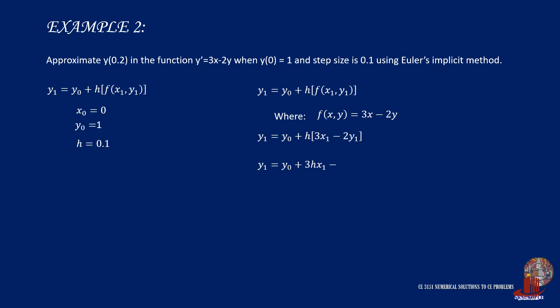Similarly, collect all y1. So move -2h·y1 to the other side and factor out y1. Then, the particular solution of y1 will be (y0 + 3h·x1) / (1 + 2h).